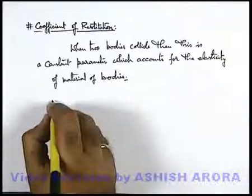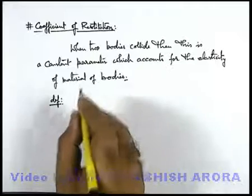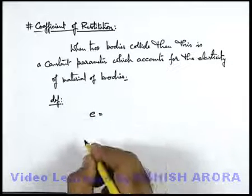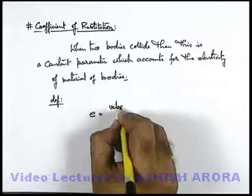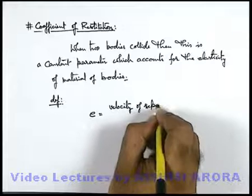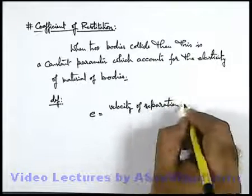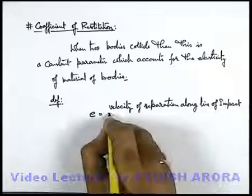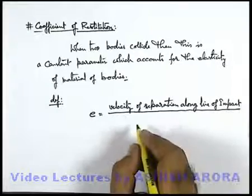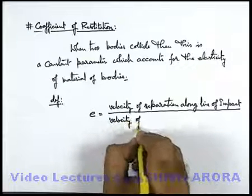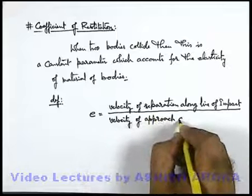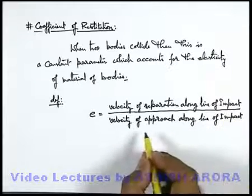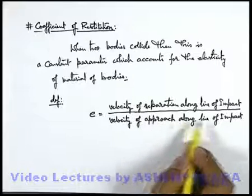It is mathematically defined as: this coefficient of restitution is denoted by the alphabet e, which is written as velocity of separation along line of impact divided by velocity of approach along line of impact. So this is a ratio of separation velocity to approach velocity along line of impact.